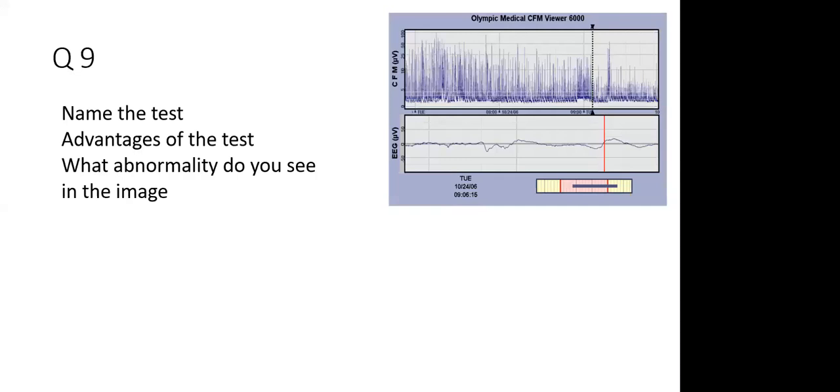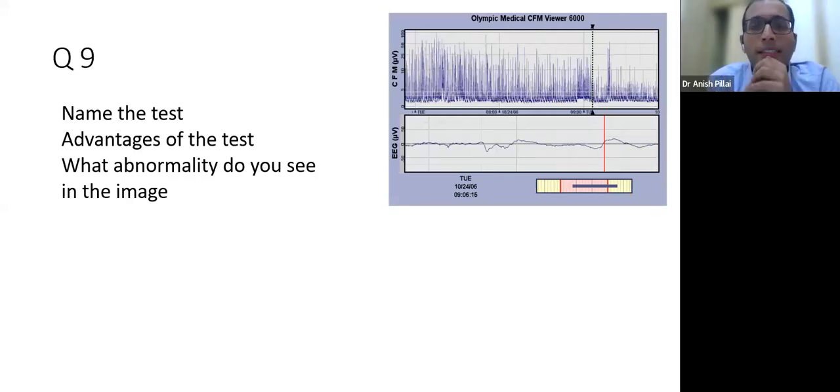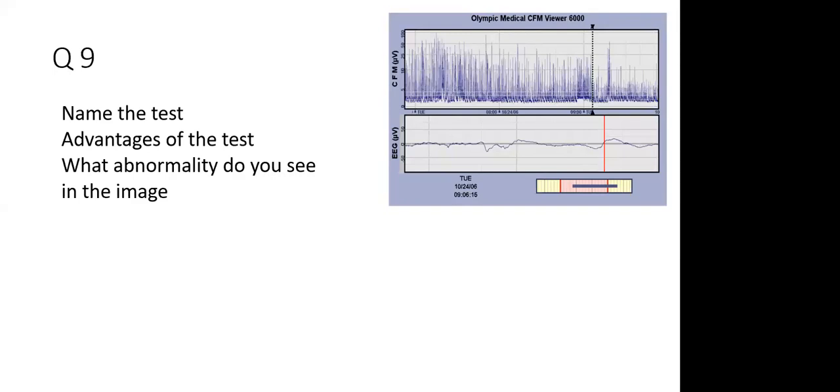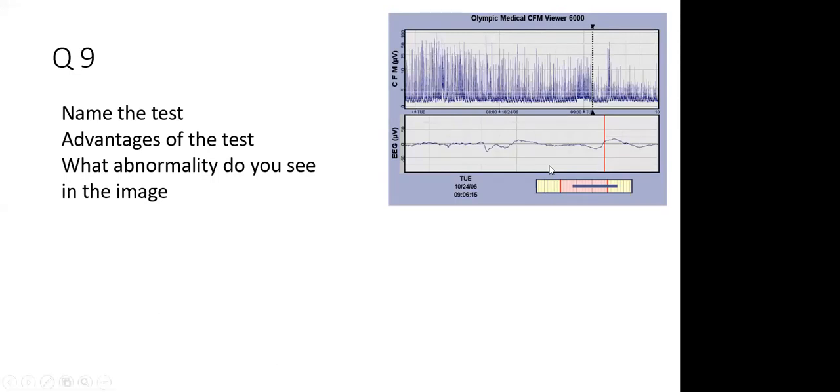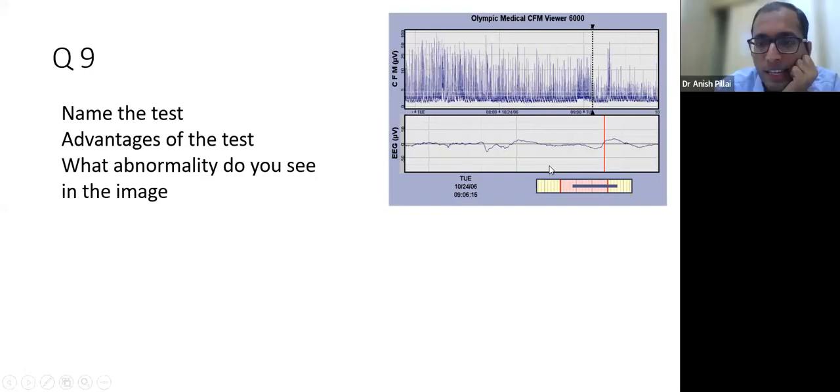Coming to the ninth question. Can somebody name this test, advantage, and what abnormality is seen? The test people have said - this is called a cerebral function monitor or amplitude EEG. Can somebody tell me the advantages of this test?